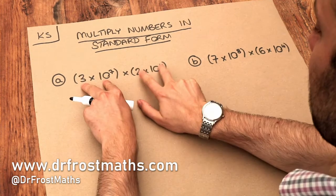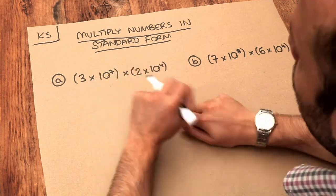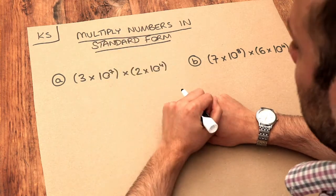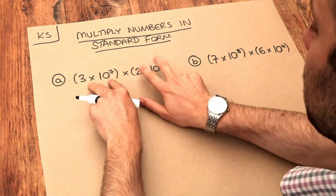So we've got two numbers here, they're both in standard form, and if you don't know what standard form is then please watch my videos on that first, and we want to multiply them together.